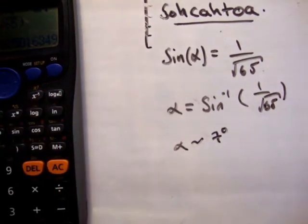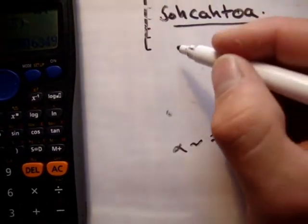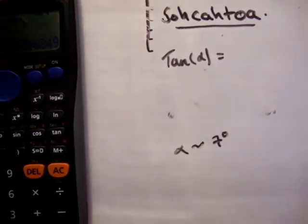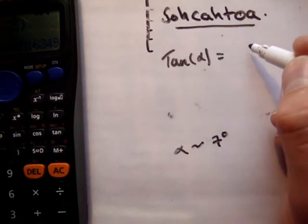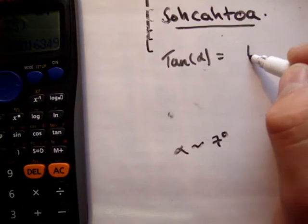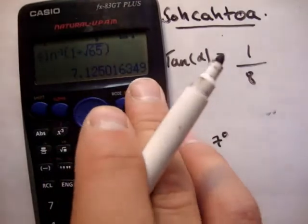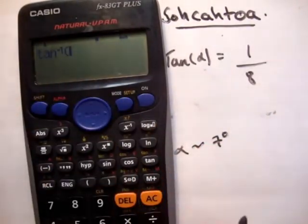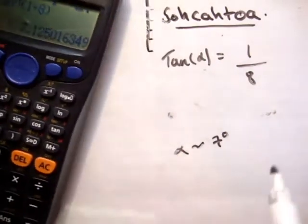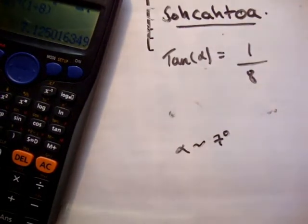Just to prove you can do it different ways, we're going to use tangent this time. So tan alpha equals opposite over adjacent, which equals 1 over 8. Therefore inverse tan of 1 over 8 — shift tan, 1 divided by 8 — equals 7.12, which is approximately 7 degrees. Both ways give us the same answer, so alpha is approximately 7 degrees.